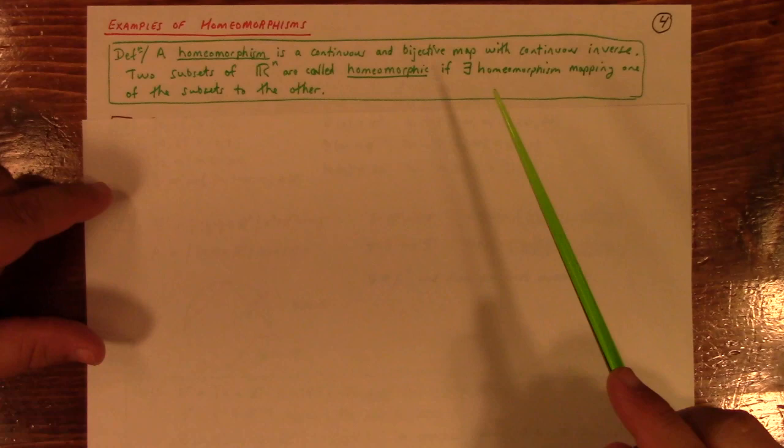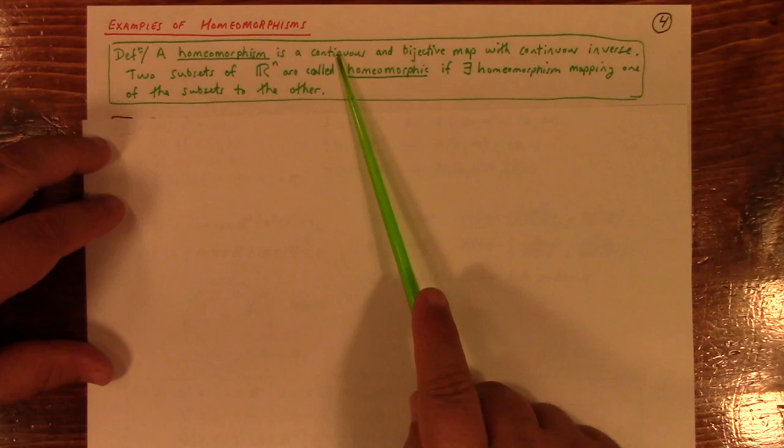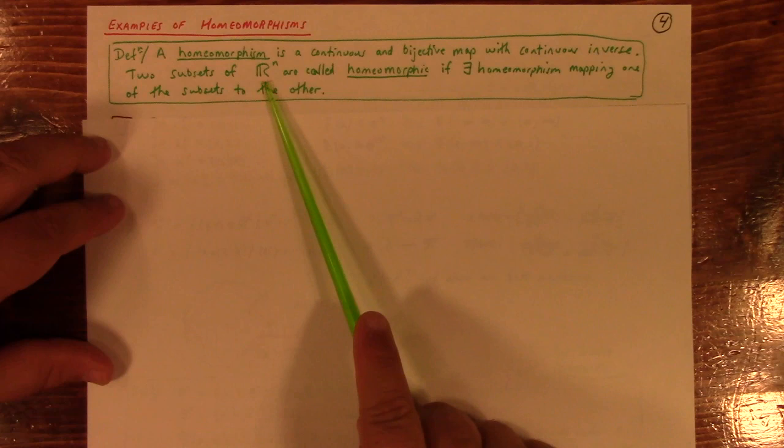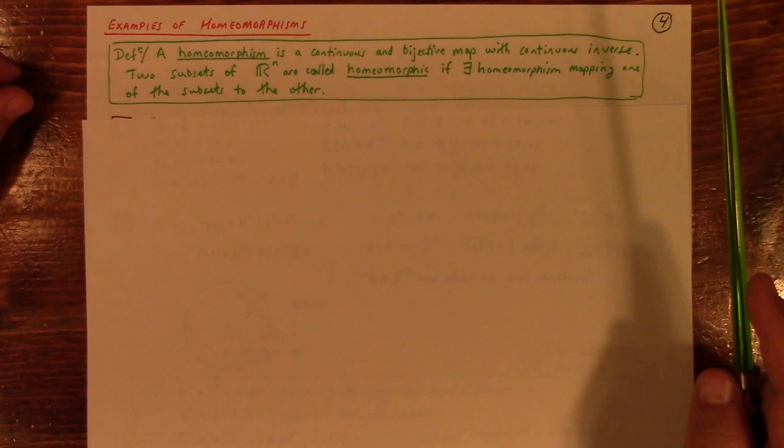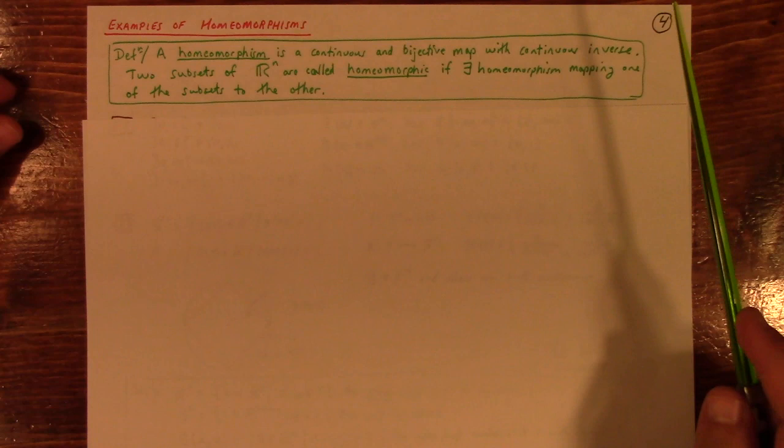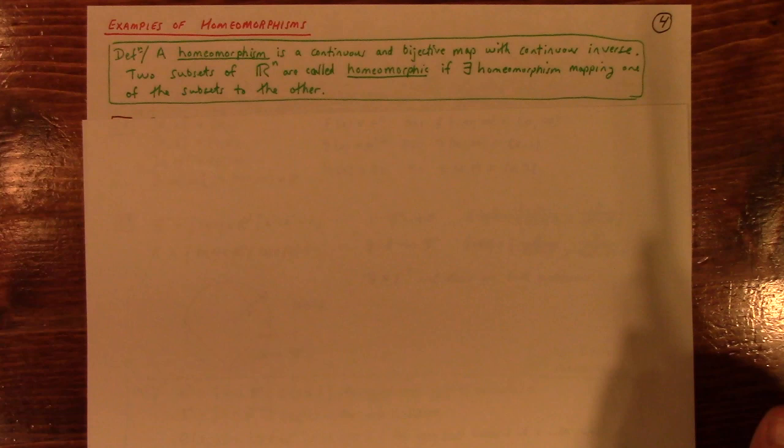A homeomorphism is a continuous and bijective map that also has a continuous inverse. Two subsets of R^N are called homeomorphic if there exists a homeomorphism mapping one of the subsets to the other. So, if you've had linear algebra, this is a lot like isomorphism, except it's far less restrictive. Homeomorphism is just a bijection with continuous inverse, like every linear map on a finite dimensional vector space, when everything is put in order, is continuous. But certainly not every continuous map is linear. Continuous is a much weaker condition than linearity.